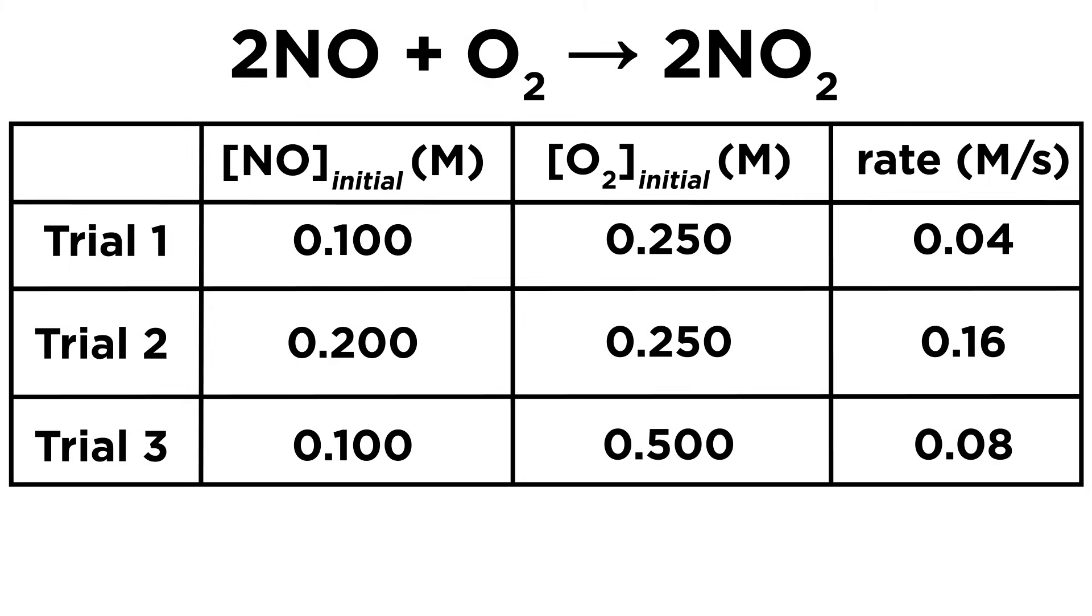We can see for the first two trials O2 concentration stays the same but NO doubles. As a result the rate quadruples, so the reaction must be second order with respect to NO.